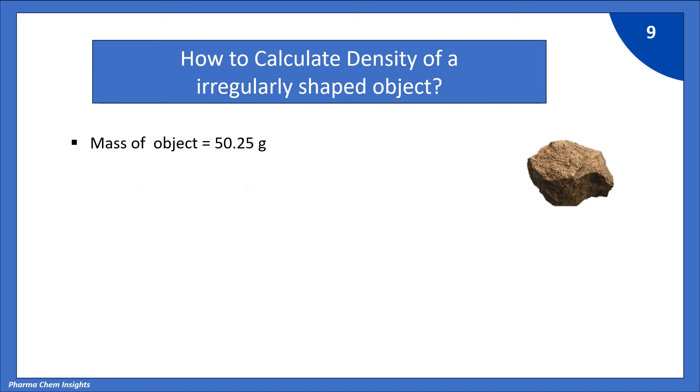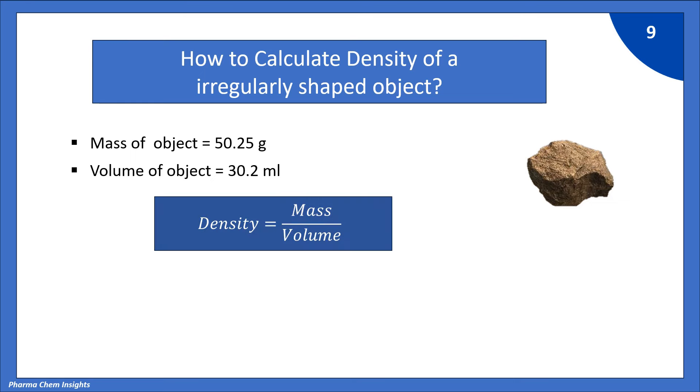Now, let us see the calculation. Mass of object is 50.25 g. Volume of object is 30.2 ml. So, according to formula, density is mass divided by volume.